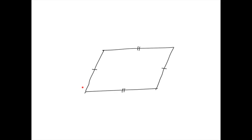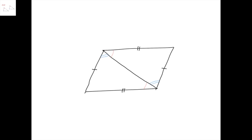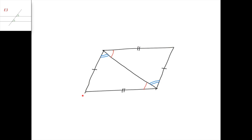Consider now this situation in which we have a quadrilateral such that this side equals this side, and this side equals this side. The question is: is it necessarily a parallelogram? The answer is yes. Note that this triangle here is congruent to this triangle, because they have three equal sides — this side equals this side, this side equals this side, and this side is common. Therefore, this angle equals the corresponding one here, and this angle equals the corresponding one here. From this angle equaling this angle we get that this side is parallel to this side, and from this angle equaling this angle we get that this side is parallel to this side, so it's a parallelogram.